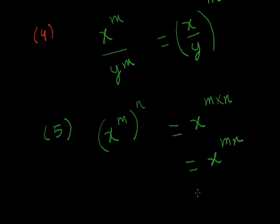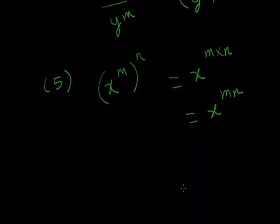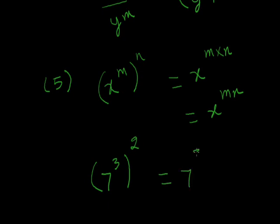Law 5 basically means that if any number has a power m and then the whole expression is again raised to another power, both powers get multiplied. For example, 7 raised to the power 3, and this whole expression raised to the power 2, gives 7 raised to the power 3 times 2, which equals 7 raised to the power 6.